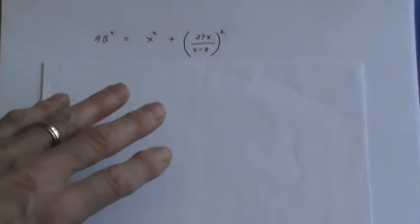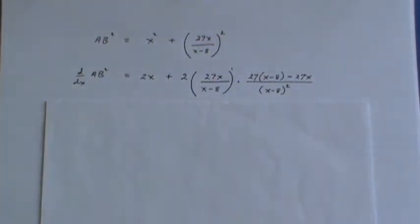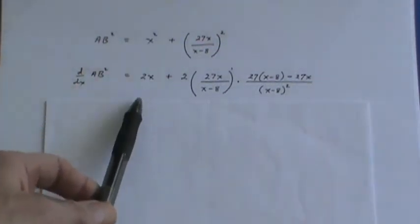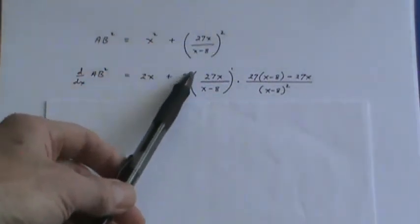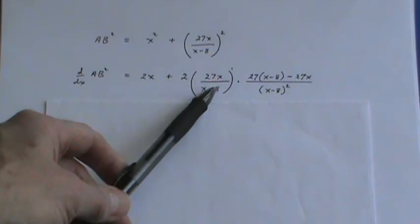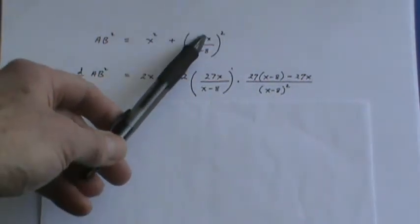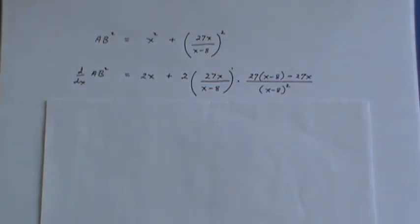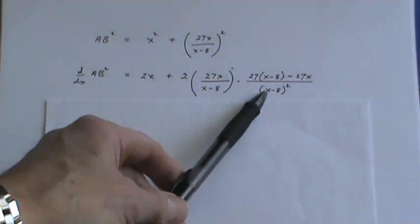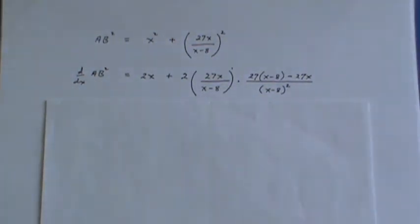So first thing we do is take the derivative with respect to x. This is very easy here, 2x. This involves the chain rule. The 2 comes down times this to the 1 times the derivative of what's inside and that of course involves the quotient rule. So I've squared the bottom of this expression and done the appropriate moves on the top.